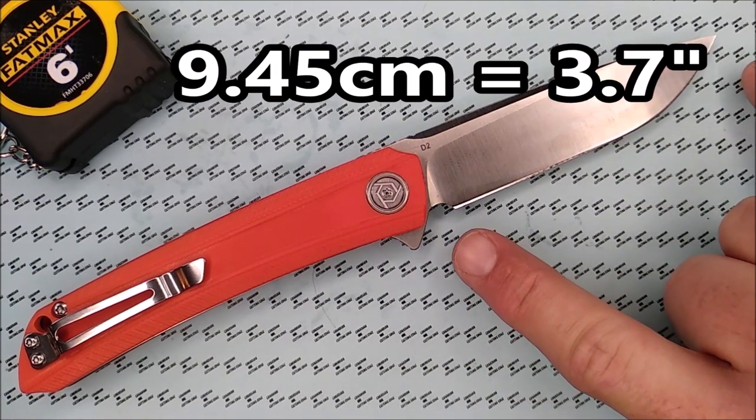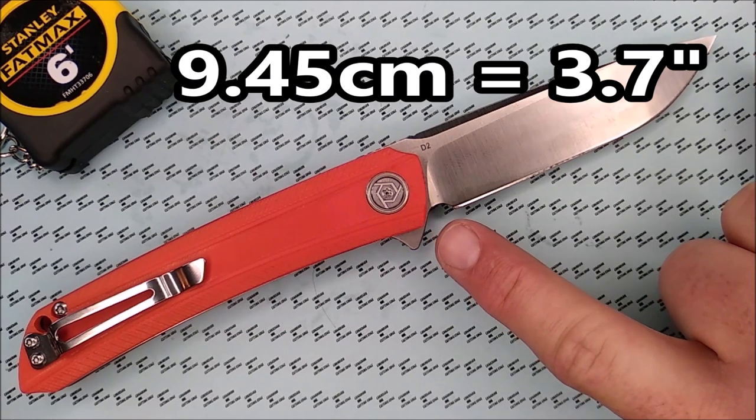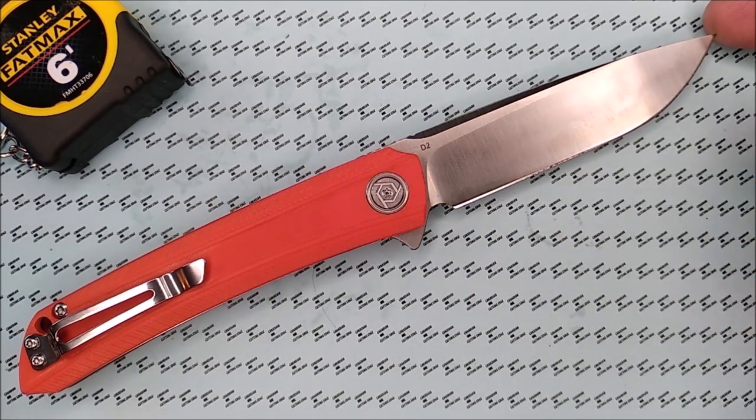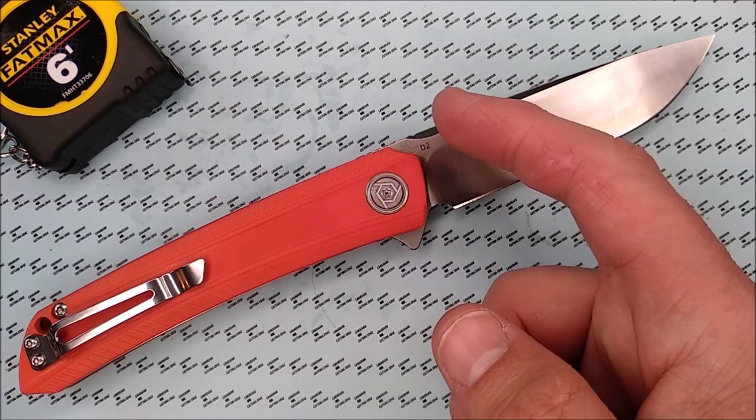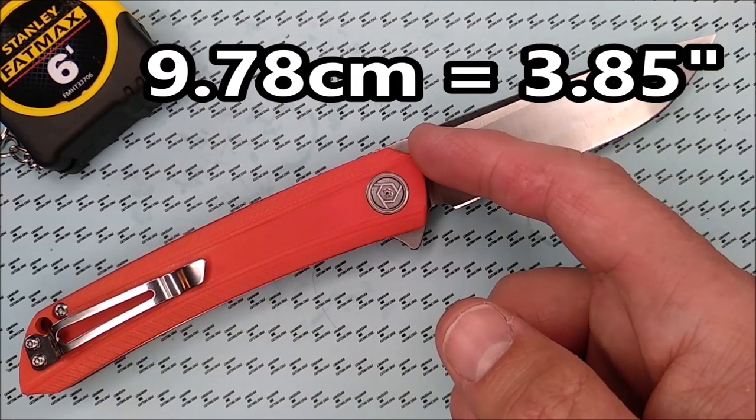The cutting edge is 9.45 centimeters, 3.7 inches. The full length, so the tip of the blade to the closest spot on the handle, 9.78 centimeters, 3.85 inches.